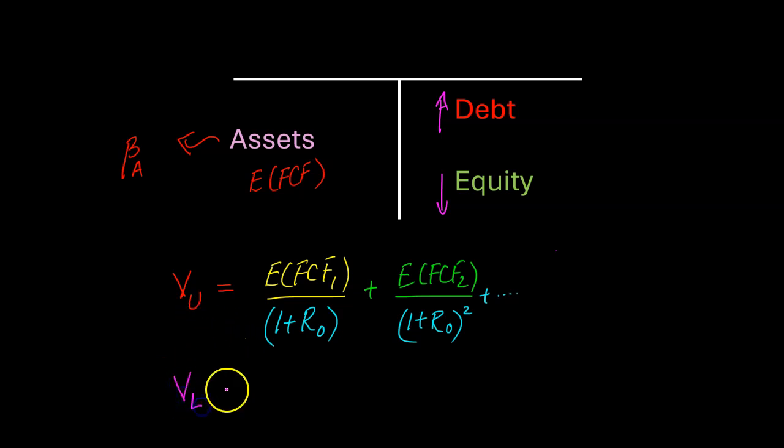So whenever you're going to try and find the value of these assets, you can't call it VU anymore. You will refer to that as VL. What is the value of these levered assets? And here's the thing: nothing has changed about the assets, right? It's the same assets. They're funded differently, which means that the cash flows that they are going to generate are still the same. So it's the same expected financial cash flows.